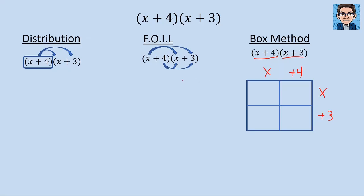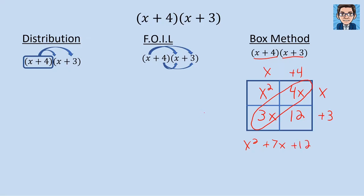To fill in each box, we multiply what's on top by what's on the side. x times x fills the first box. 4 times x fills the next. x times 3 goes below. And 4 times 3 gives us 12 for the final box. When combining like terms, the like terms end up on the diagonals. x squared is by itself, the 4x and 3x combine to get 7x, and 12 is by itself. So by the box method we get x squared plus 7x plus 12.